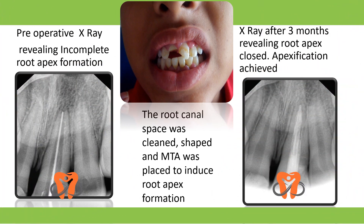To illustrate with a case: a 10-year-old reported with a history of fall and a complicated crown fracture involving enamel, dentine, and pulp, with significant crown structure loss. A pre-operative x-ray revealed the root apex was incompletely formed. The root canal was cleaned, shaped, and prepared, then filled with mineral trioxide aggregate to induce apexification. After three months, an x-ray confirmed the root apex had formed nicely.